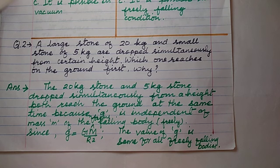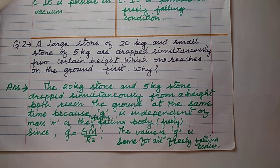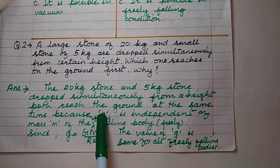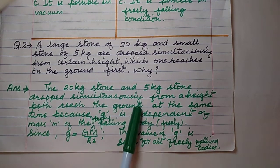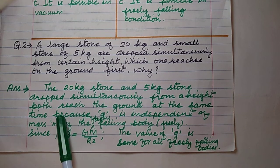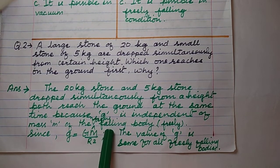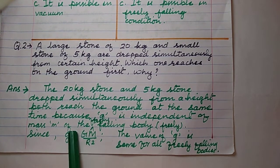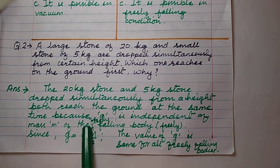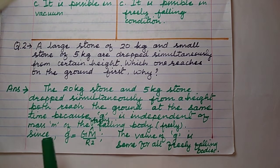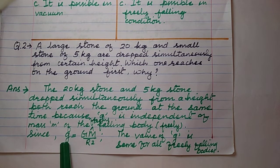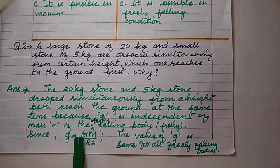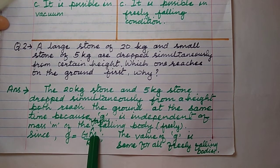The next question: a large stone of 20 kg and a small stone of 5 kg are dropped simultaneously from a certain height. Which one reaches the ground first and why? Both reach the ground at the same time because g is independent of the mass of the body. The formula is g = GM/R², where G is the universal gravitational constant, M is the mass of the earth, and R is the radius of the earth.